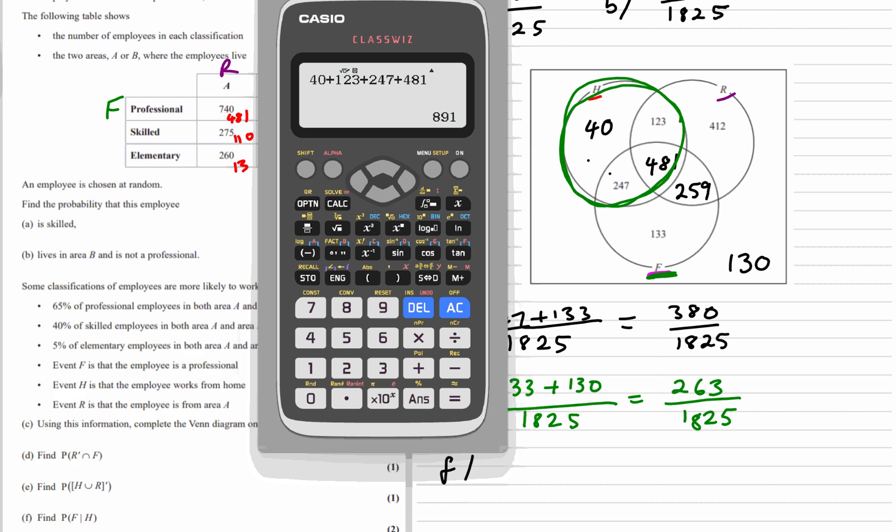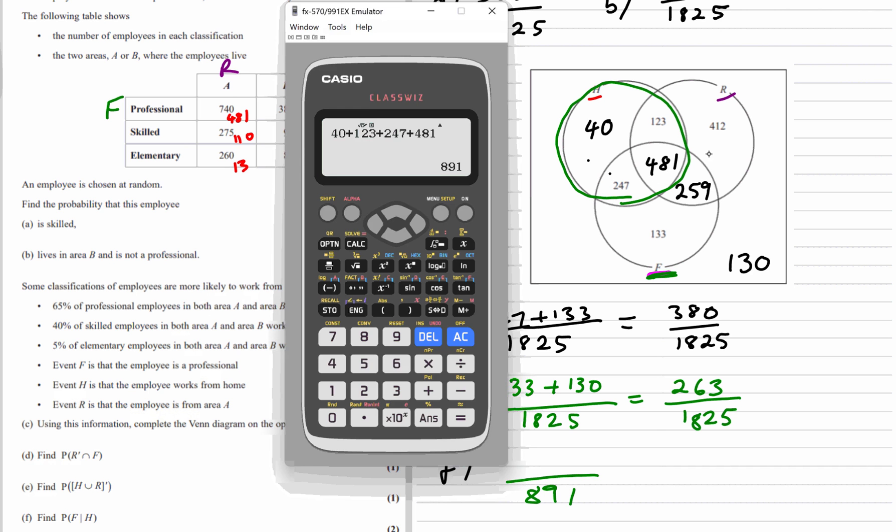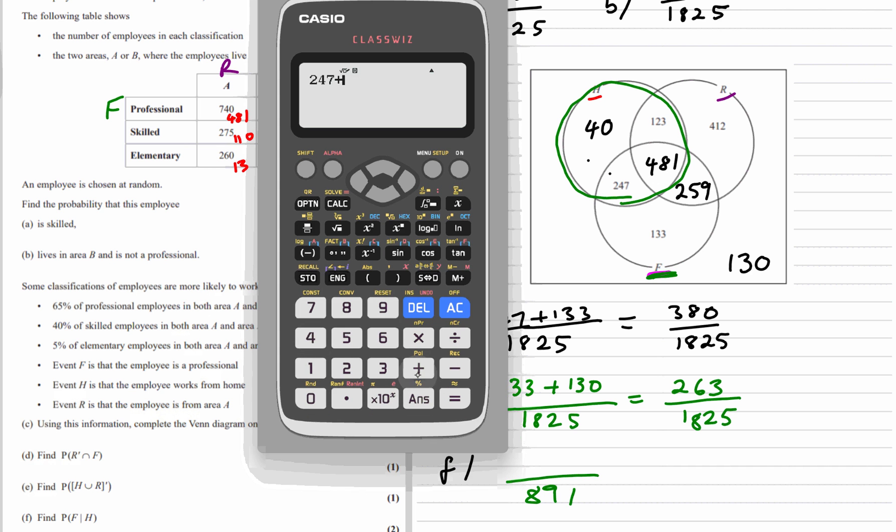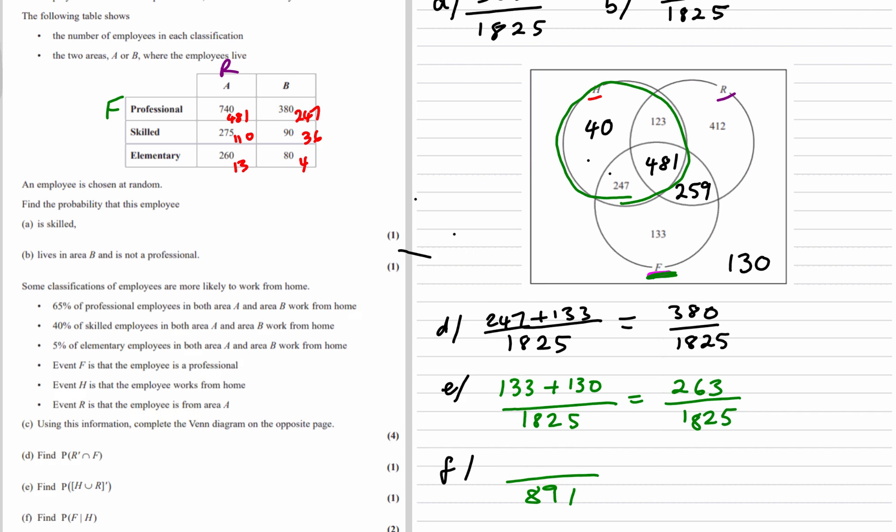And then F, so F within this circle. What is F within that circle? 247 and 481, which is 728 over 891.